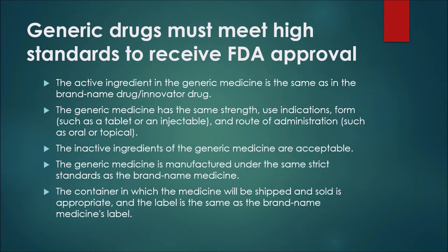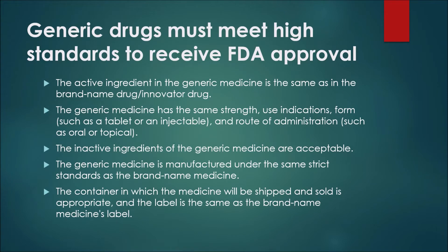Generic drugs must meet high standards to receive FDA approval. The active ingredient in the generic medicine is the same as in the brand name or innovator drug. The generic medicine has the same strength, use indications, form — such as a tablet or an injectable — and route of administration, such as oral or topical. The inactive ingredients of a generic medicine are acceptable. The generic medicine is manufactured under the same strict standards as the brand name medicine, and the container in which the medicine is shipped and sold is appropriate.